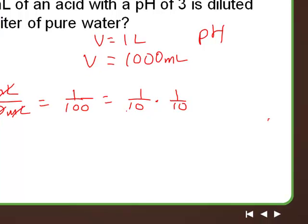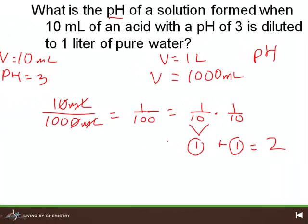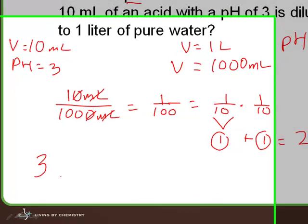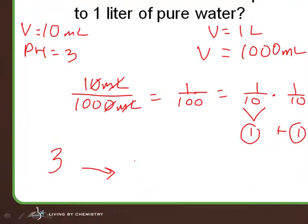If we decrease, if we dilute it by a factor of 10, how many pH units is that equal to? One. So if I did it twice, 1 plus 1 equals what? 2. So it's going to change by two pH units. So if we started at 3 originally, what must it go to?